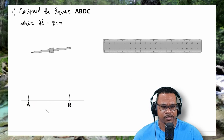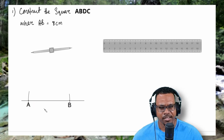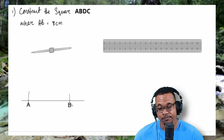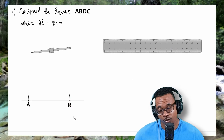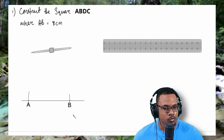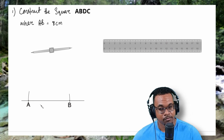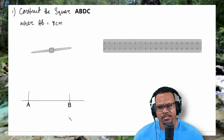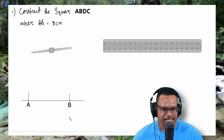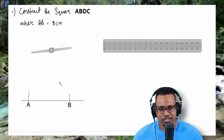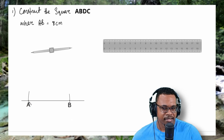Now at this point, we can construct 90 degree angles at point A and also at point B. Or we can just construct one 90 degree angle at point A or B, and then use the concept of parallel lines to construct the rest of the square. So I will choose to just construct one 90 degree angle at point A.